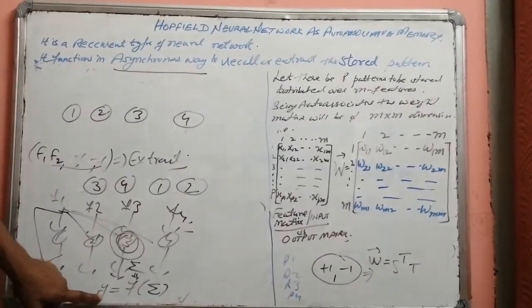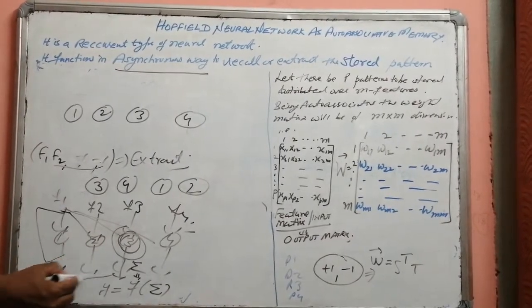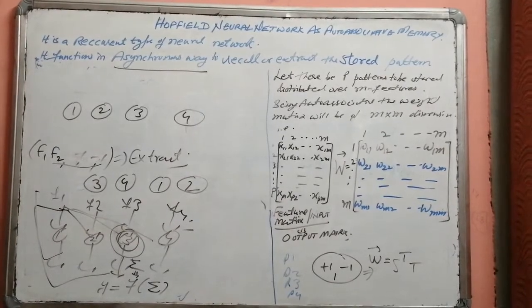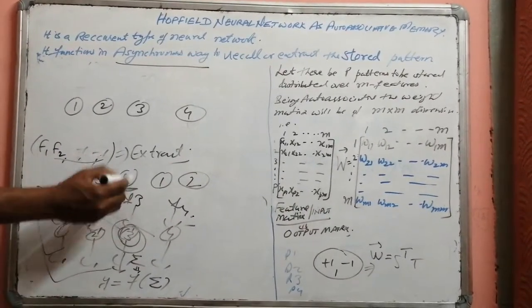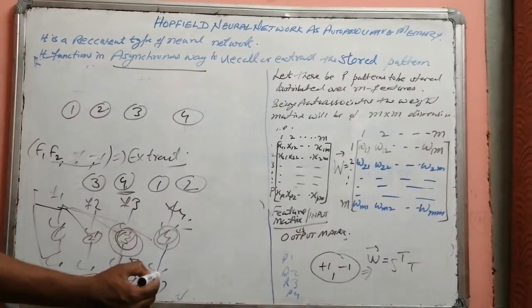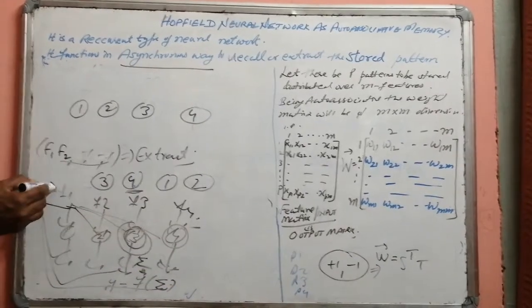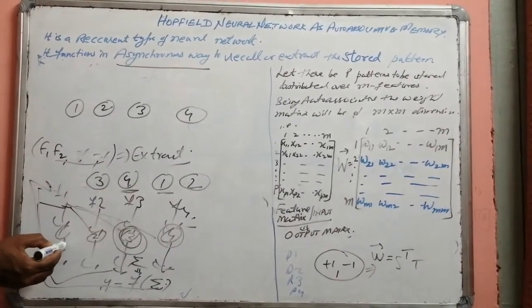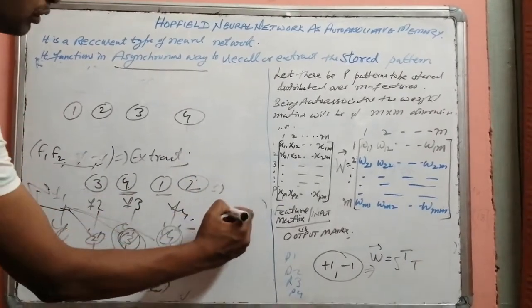This output Y is fed back to other neurons as their weights. In the next iteration, neuron number four is activated and excited, output is generated and fed back. Then neuron number one is activated, then neuron number two is activated. This completes one epoch.